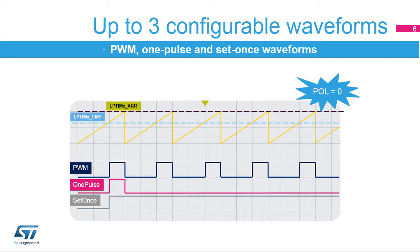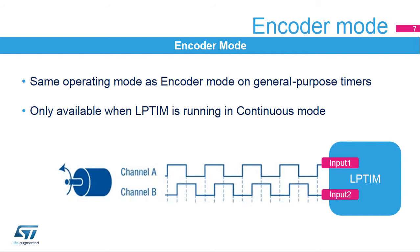The low-power timer's output polarity is controlled through the WAV-POL bit field in the LP-TIM-CFGR register. The encoder mode function can interface with incremental quadrature encoder sensors using the peripheral's input-1 and input-2 inputs. Both inputs feature glitch filtering circuitry. The encoder function is similar to the one embedded in the general-purpose timers. In order to use the encoder mode function, the low-power timer must be running in continuous mode. Note that only low-power timer 1 embeds the encoder mode function — low-power timer 2 does not.